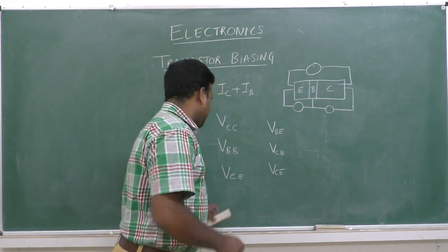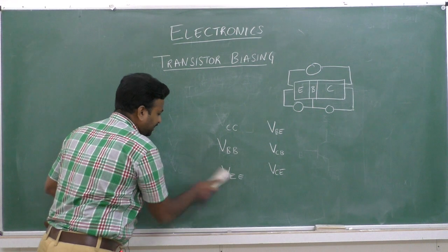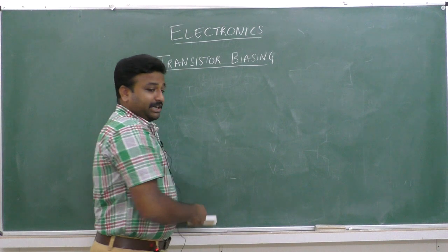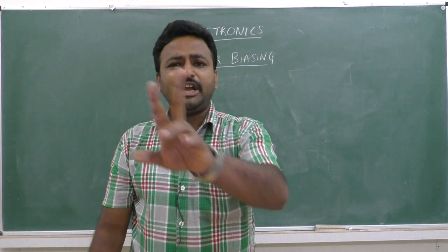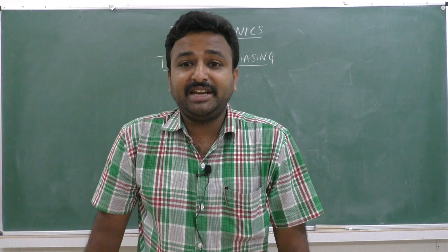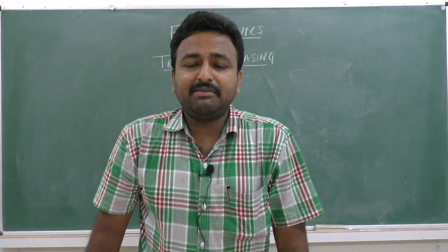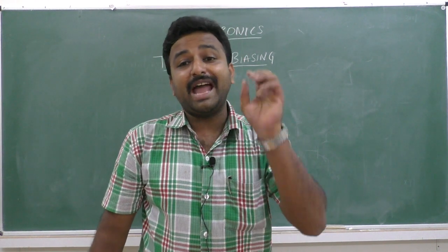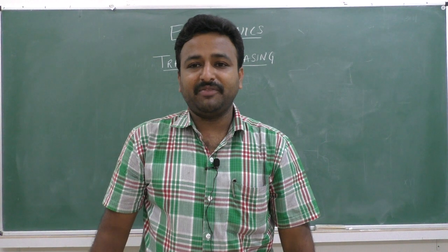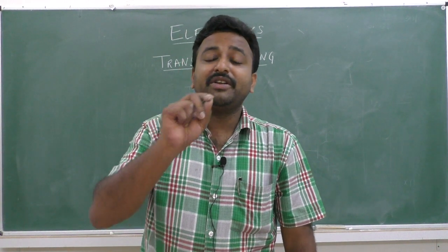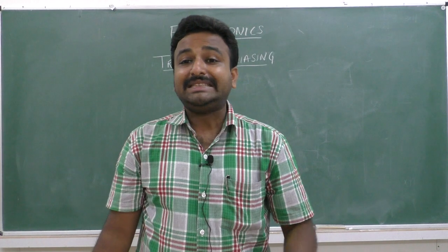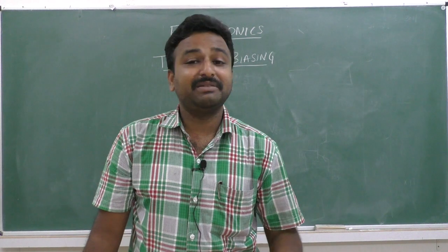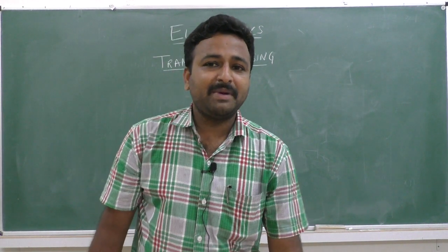Unlike a transistor, a diode had only two terminals and even a battery has two terminals. Therefore, there were only two possible combinations of connection with a diode. One is forward biasing — where the anode of the diode is connected to the positive terminal of the battery and the cathode to the negative terminal.